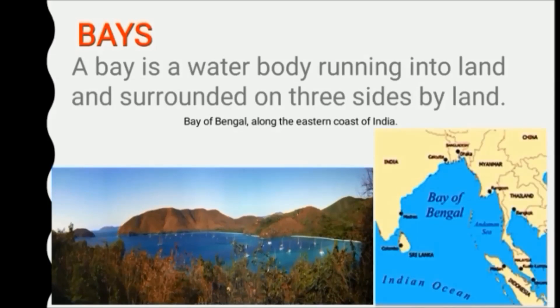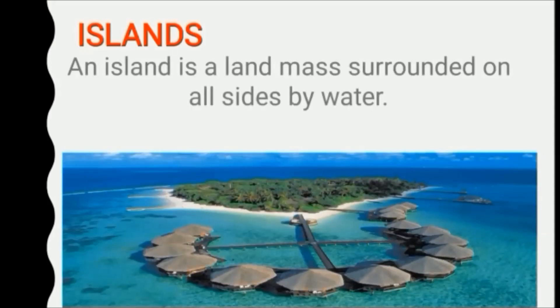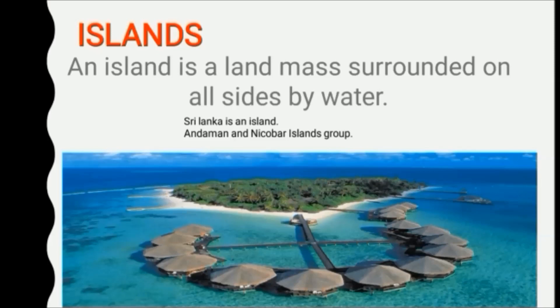What is an island? An island is a land mass which is surrounded by water on all four sides. Sri Lanka is an island. The Andaman and Nicobar Islands in the Bay of Bengal are a group of islands which are a part of India.